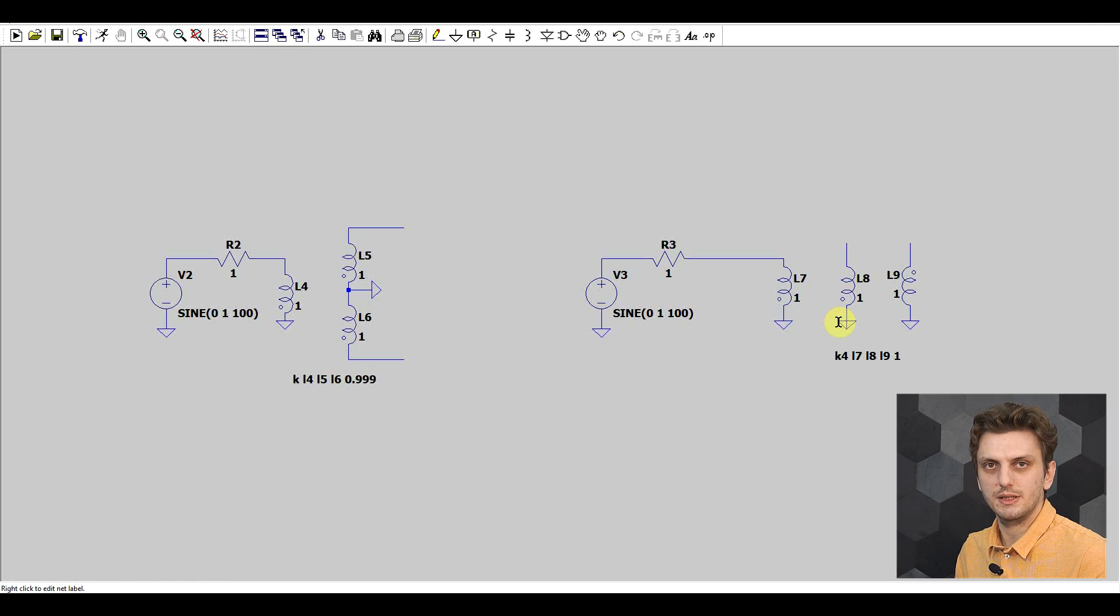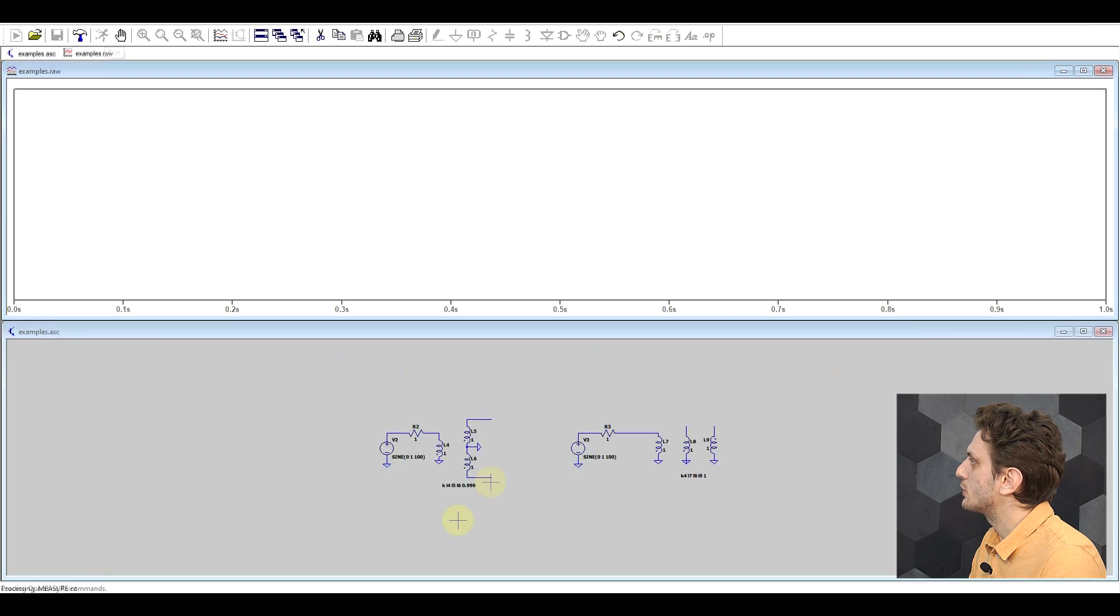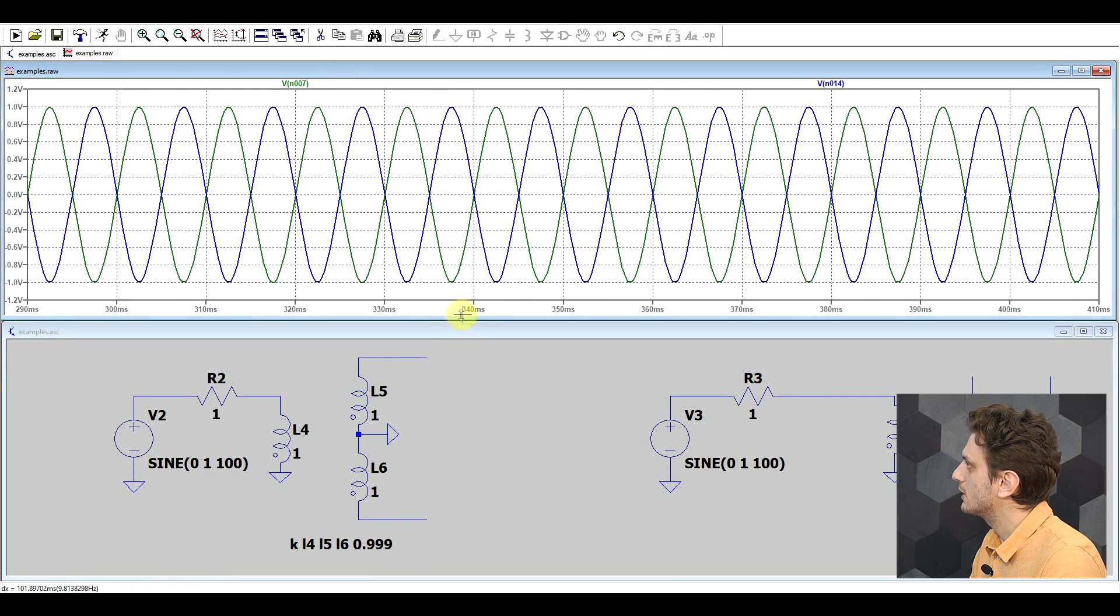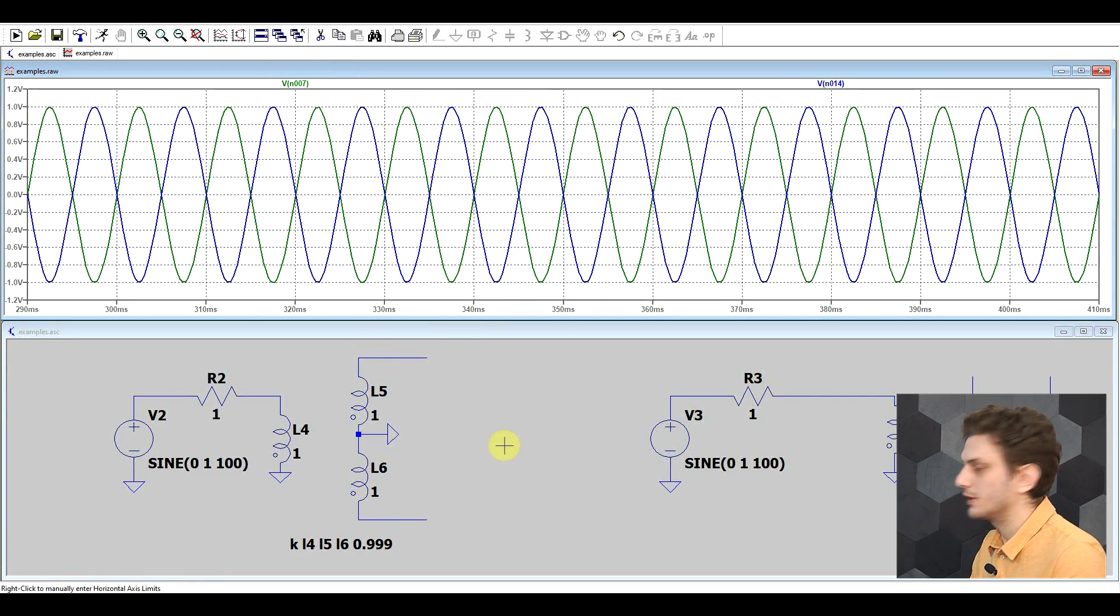So the point basically means where the inductor is starting. And it's useful to show its orientation compared to other inductors in the same transformer. So with these arrangements if we look at the waveforms we can see that one of the signals is 180 degrees out of phase with the other signal.